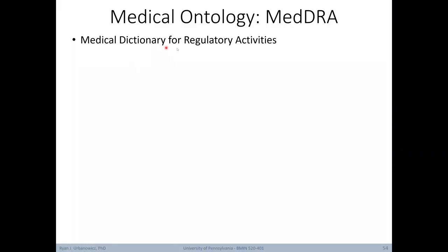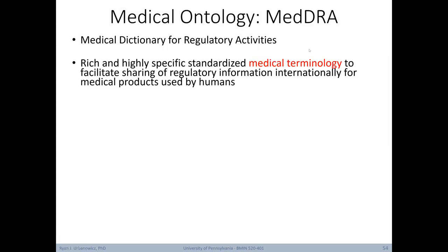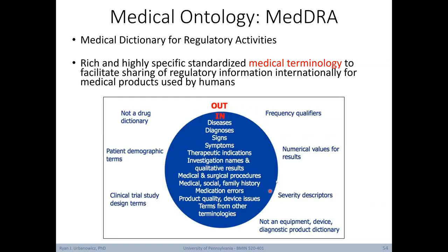In the last section of our lecture, we'll talk about some other medical ontologies. The first is MedDRA, which stands for the Medical Dictionary for Regulatory Activities. This is a rich and highly specific standardized medical terminology to facilitate sharing of regulatory information internationally for medical products used by humans. Here's a schematic that tries to describe what is included within MedDRA versus what is not. So MedDRA includes terms related to diseases, diagnoses, signs, symptoms, medical and surgical procedures, and so forth. Things that are not included in MedDRA include drug names, patient demographic terms, clinical trial study design terms, and severity descriptors. Again, notice how this is an ontology that has a fairly restrictive domain of what it does and does not cover.